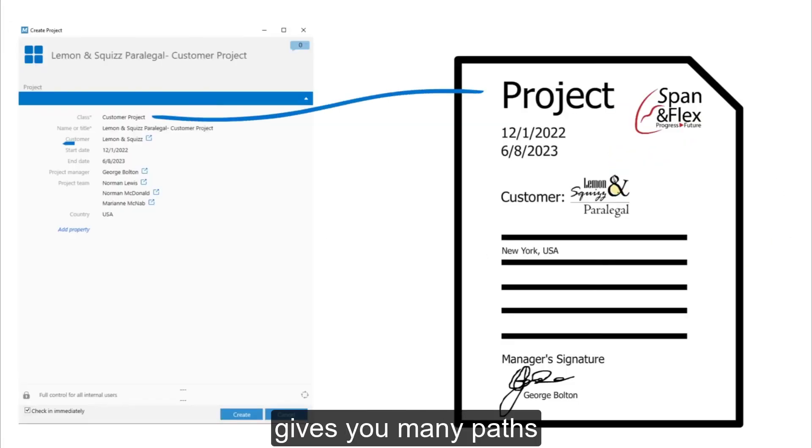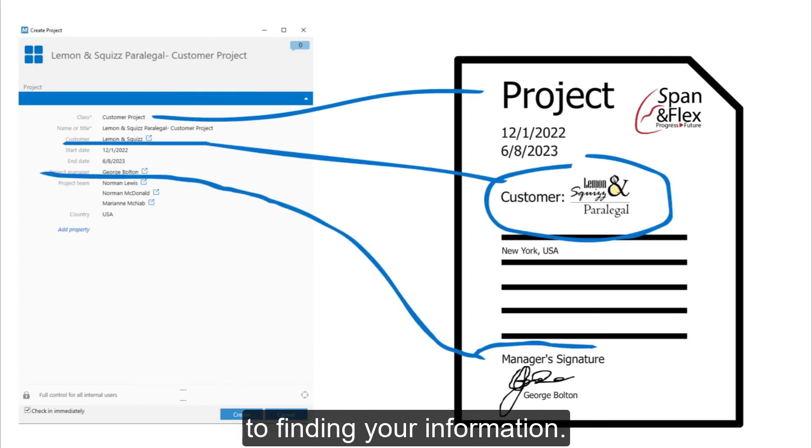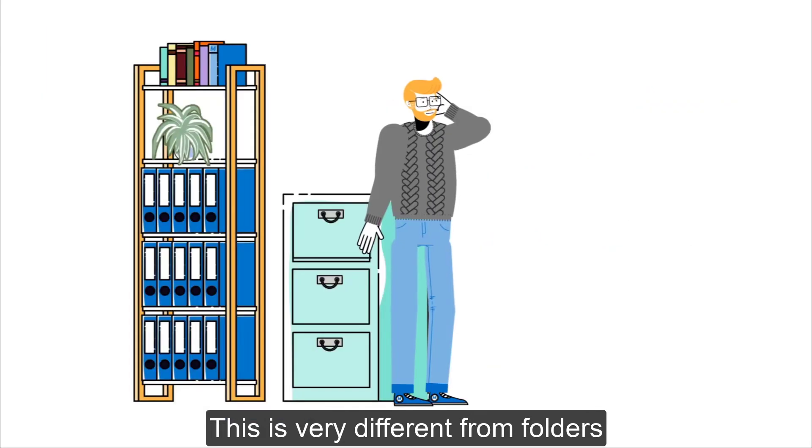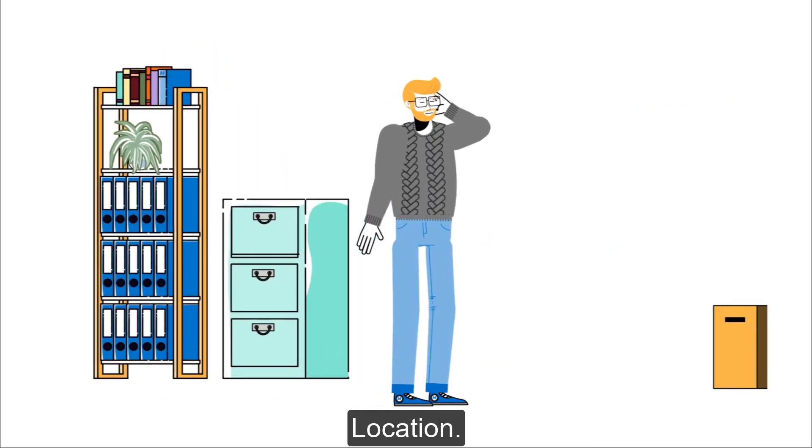Metadata gives you many paths to finding your information. This is very different from folders where there is only one path, location.